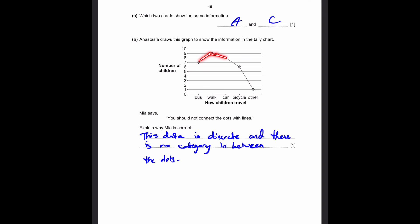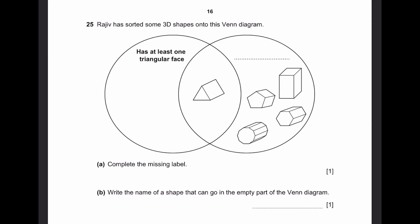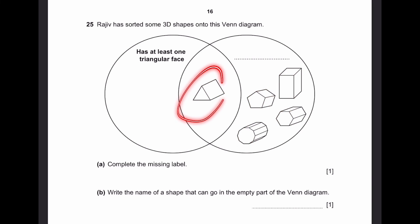Question 25. Vajiva sorted some 3D shapes onto a Venn diagram. One label is 'has at least one triangular face,' and another label is missing. All five shapes have a cross-section at the front and a length — they are all classified as prisms, since they have a cross-section stretched across the whole object. So the missing label is 'prisms.'